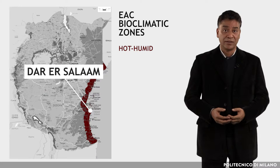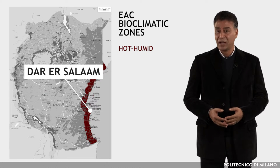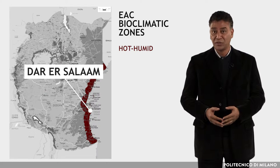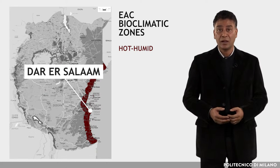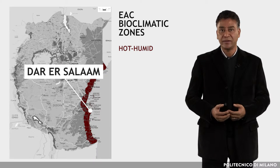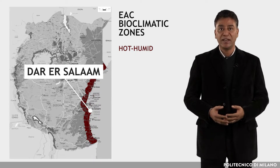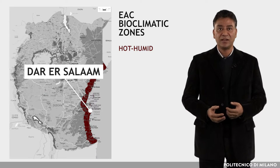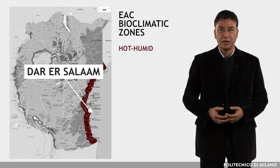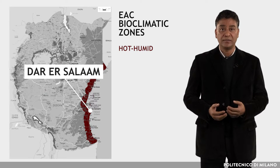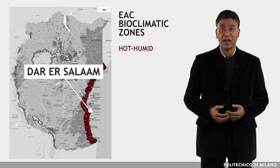Along and near the coast, depending on the terrain, the prevailing north-east and south-east monsoon winds are modified by sea-land breezes during the day and, to a much lesser extent, by land-sea breezes at night.